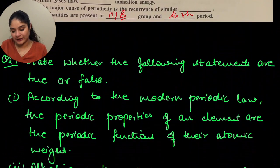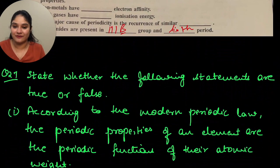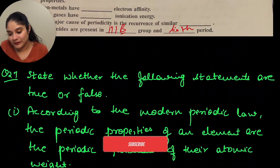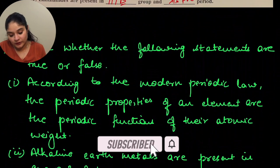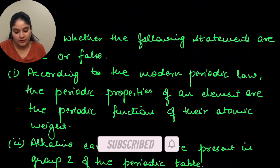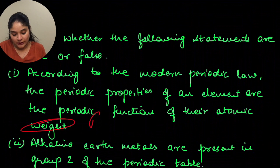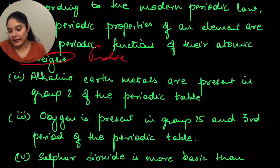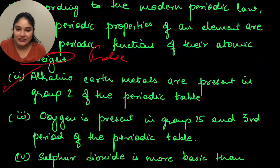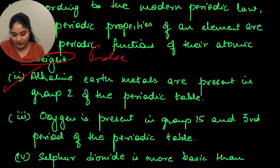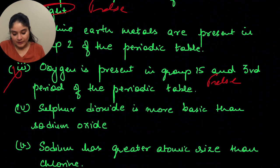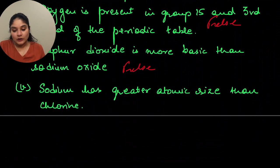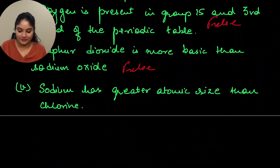Question 27: state whether the following statements are true or false. According to the modern periodic table, the periodic properties of an element are the periodic function of their atomic weight — false. Alkaline earth metals are present in group 2 of the periodic table — true. Oxygen is present in group 5 and third period of the periodic table — false. Sulfur dioxide is more basic than sodium oxide — false. Sodium has greater atomic size than chlorine — true.